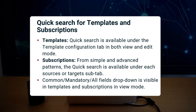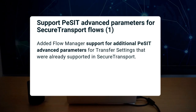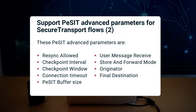The quick search filter will apply to what is displayed based on the common, mandatory, or all fields filter. Some PeSIT advanced parameters for transfer settings were not yet supported in FlowManager, but were supported by Secure Transport. So we've worked on adding this functionality in this FlowManager release in order to align with the Secure Transport capabilities. These new PeSIT advanced parameters are: Resync Allowed, Checkpoint Interval, Checkpoint Window, Connection Timeout, PeSIT Buffer Size, User Message Receive, Store and Forward Mode, Originator, and Final Destination.